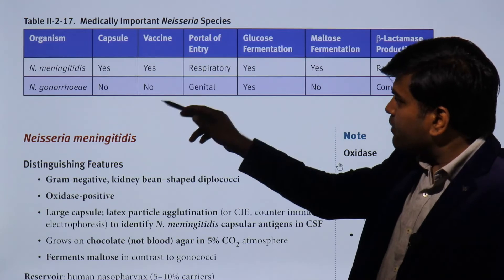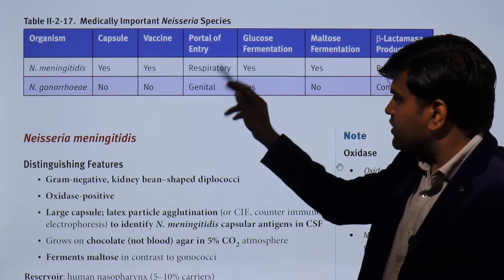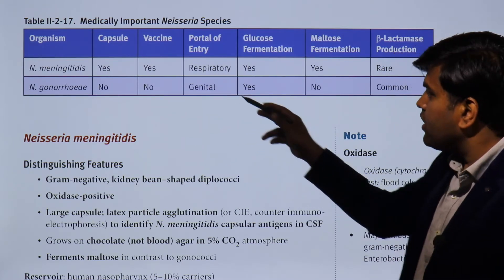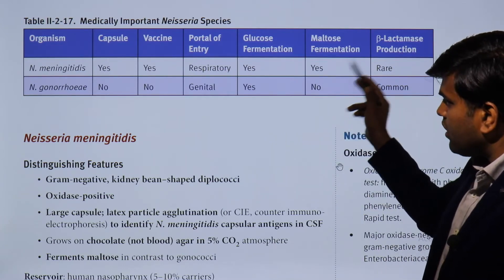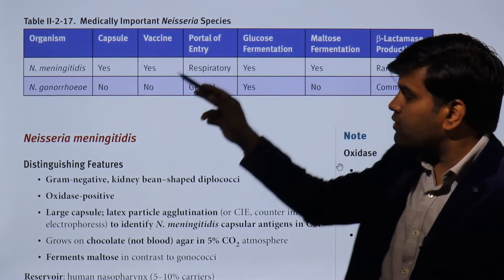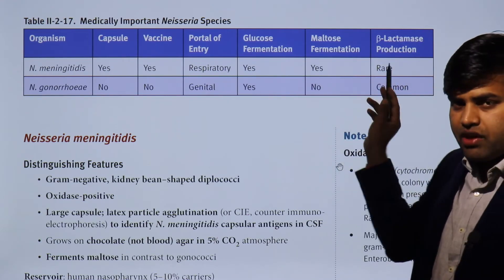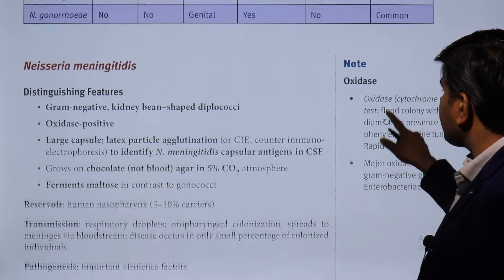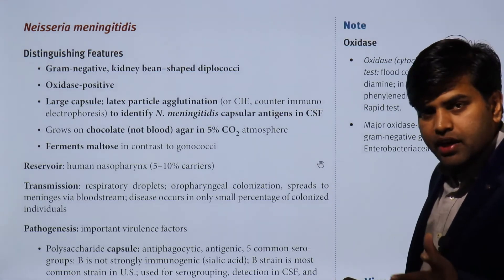The portal of entry for N. meningitidis is the respiratory tract, whereas N. gonorrhoeae causes gonorrhea, a disease of the genitourinary tract. Both ferment glucose, but only N. meningitidis ferments maltose — M for maltose, M for meningitidis. Regarding drug resistance, N. meningitidis is less drug-resistant whereas N. gonorrhoeae is commonly drug resistant.